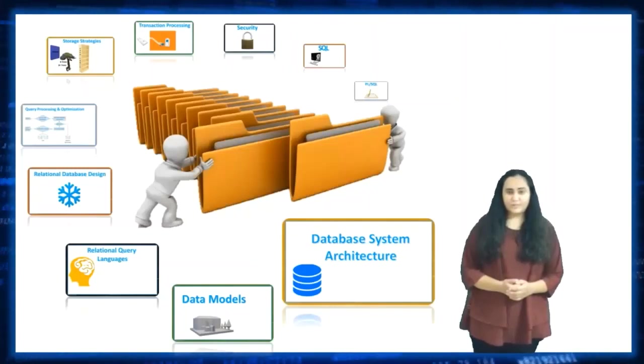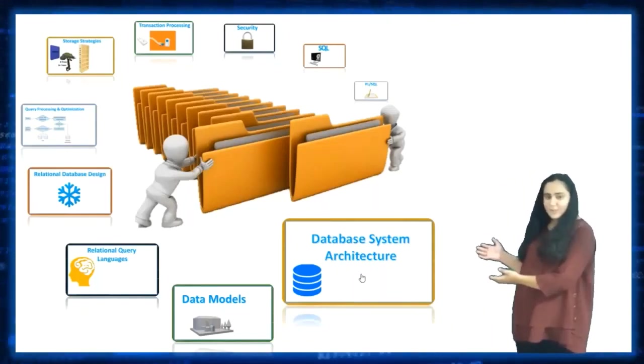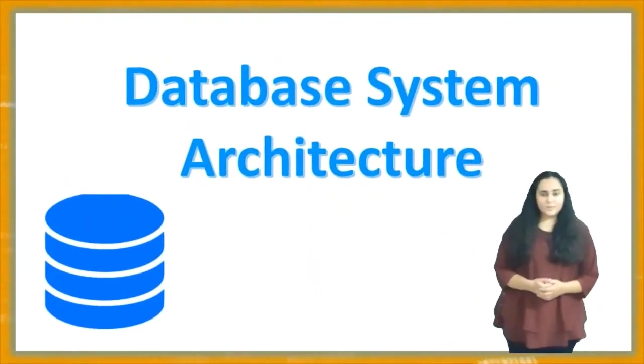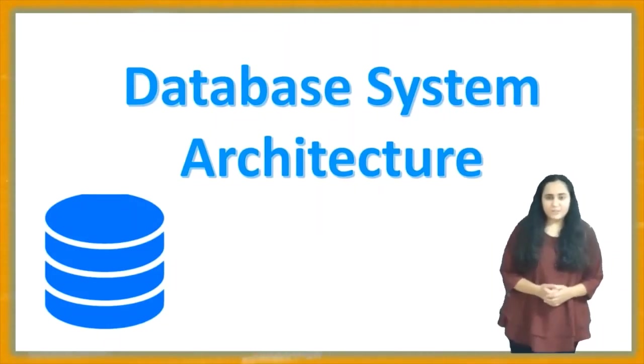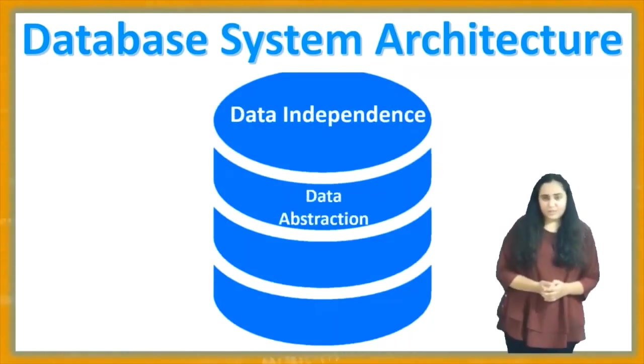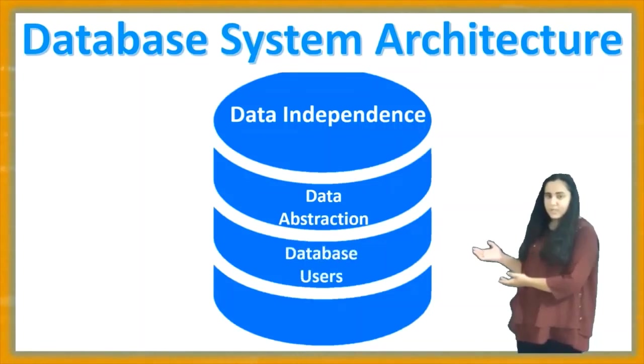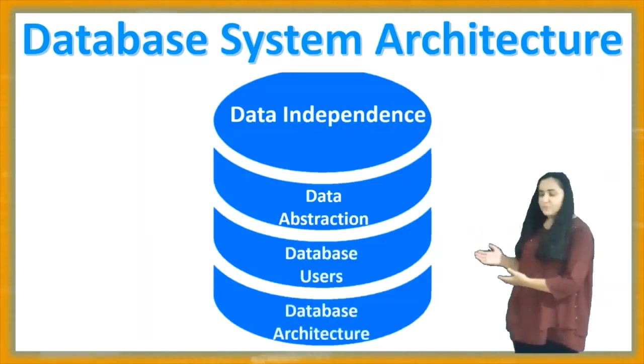The first unit you'll study in DBMS is called Database System Architecture. Database System Architecture gives you the big picture of DBMS. Here you'll study data independence and data abstraction, which provide you ways to hide data from certain users and make it available to certain users. You'll also study different types of database users and a diagram of the database system architecture.